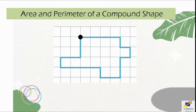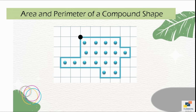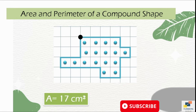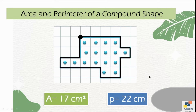We may also need to find the area and perimeter of a compound shape — a shape created by joining many rectangles or squares. To find the area, count the number of boxes inside the shape: there are 17 squares, so area equals 17 centimeters squared. To calculate the perimeter, count the boundary line segments around the shape — counting all lines gives 22, so perimeter equals 22 centimeters.